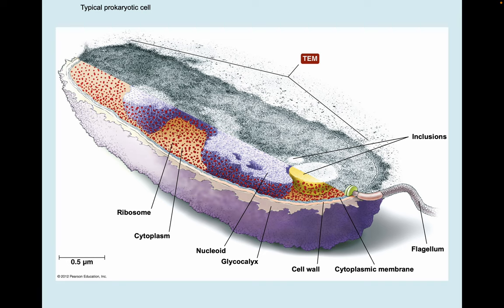We've got ribosomes — those tiny little red dots. Cytoplasm is the fluid that fills the cell. The nucleoid with the genetic material. And then the outer covering of the cell: the glycocalyx, the cell wall, the cytoplasmic membrane, and we even see a flagellum there for motility.